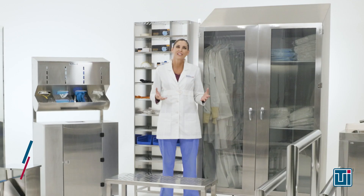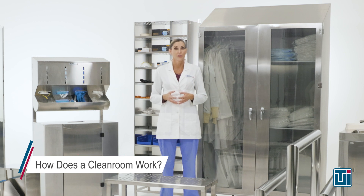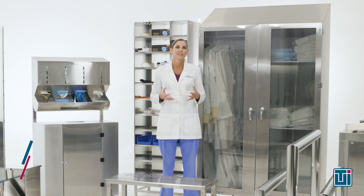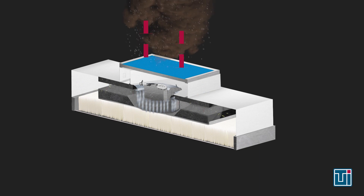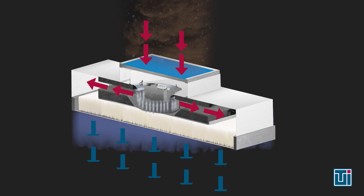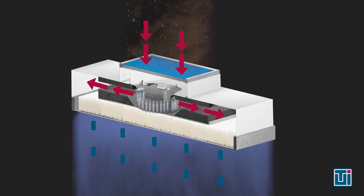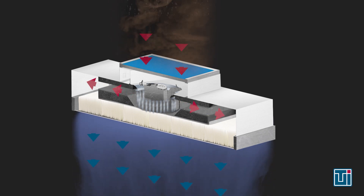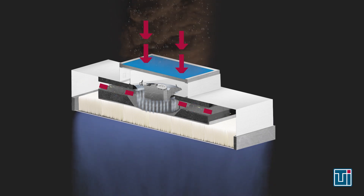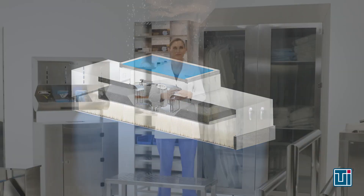How does a clean room work? Clean rooms circulate outside air through a filtration system containing HEPA or OPA filters to remove contaminants from the air. The clean filtered air is then forced into the clean room through ceiling-mounted fans.